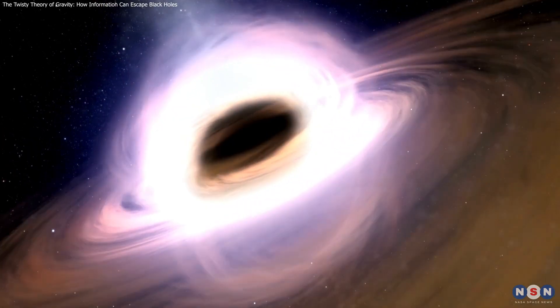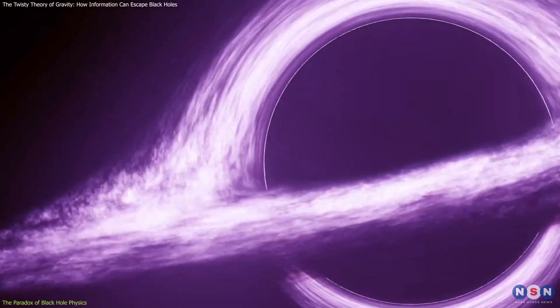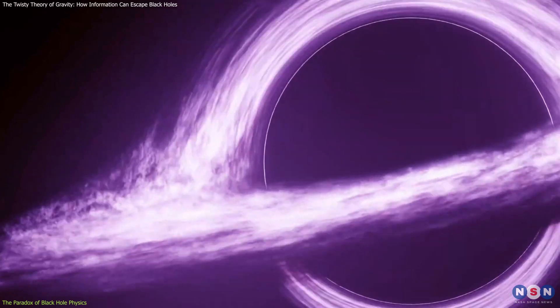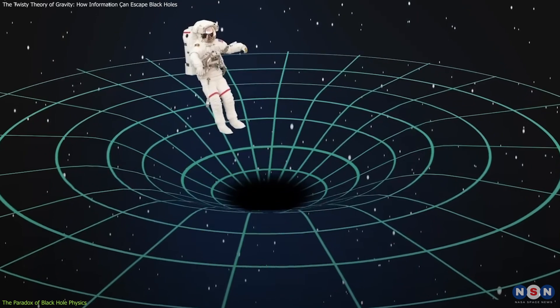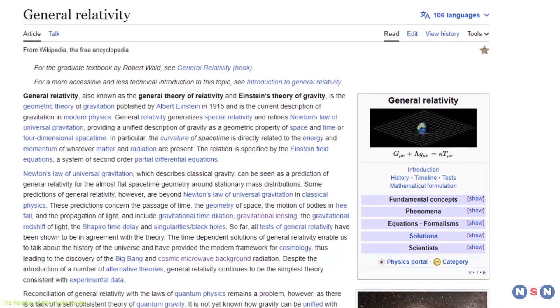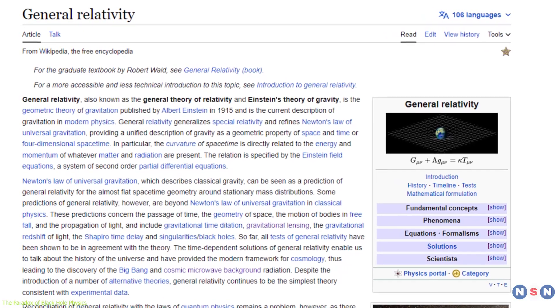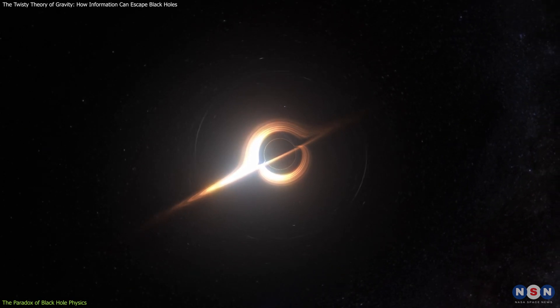To understand why this twisty theory of gravity is so revolutionary, we need to first review some of the basic concepts of black hole physics. The boundary of a black hole is called the event horizon, and it marks the point of no return for anything that falls in. According to Einstein's theory of general relativity, which describes gravity as the curvature of space and time, a black hole has only three properties: